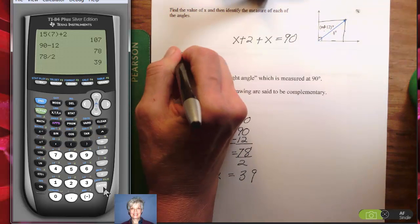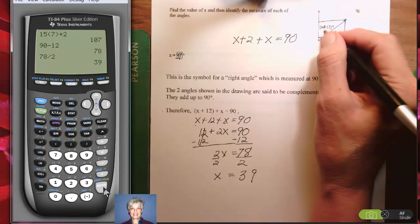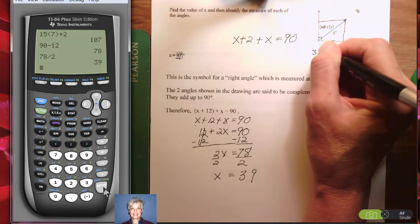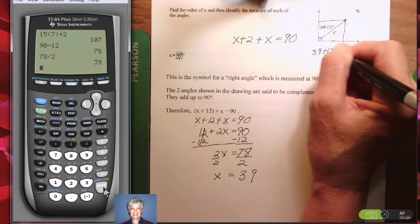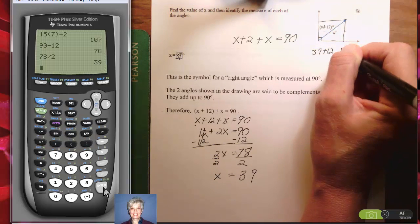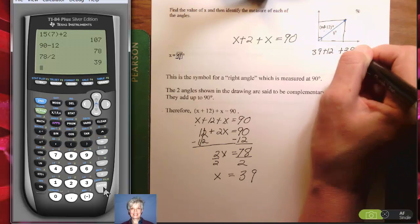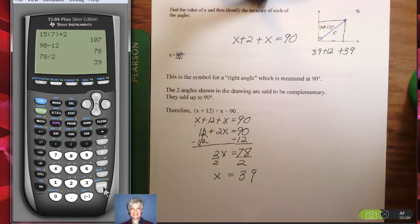Let's check that and make sure it's true. We have x plus 12, which is going to be 39 plus 12, and then plus x, which is 39. Does that add up to 90? Let's see. 39 plus 12 plus 39, enter. Yes, it does. It adds up to 90. So we're on the right track.